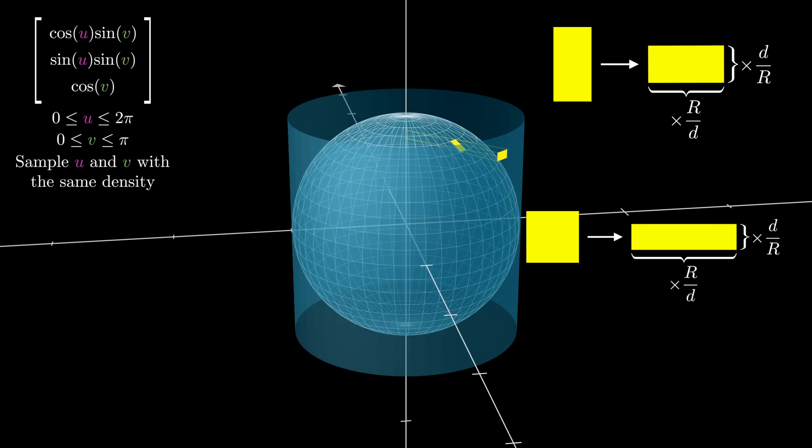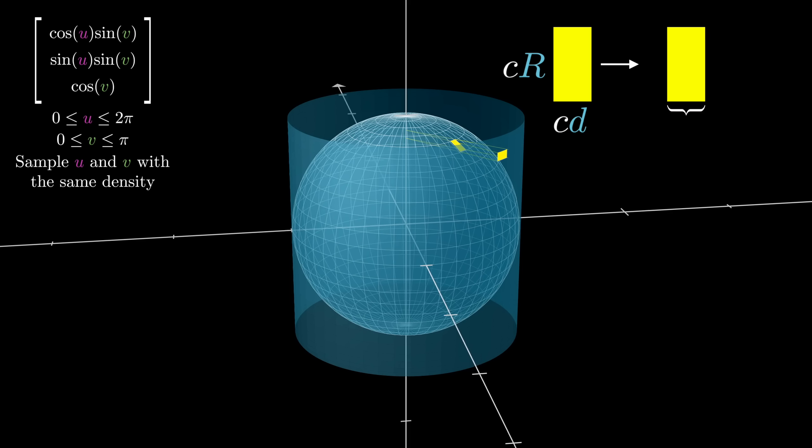So, for this very specific case, rescaling the width by r over d and rescaling the height by d over r actually does have the effect of a 90 degree rotation.